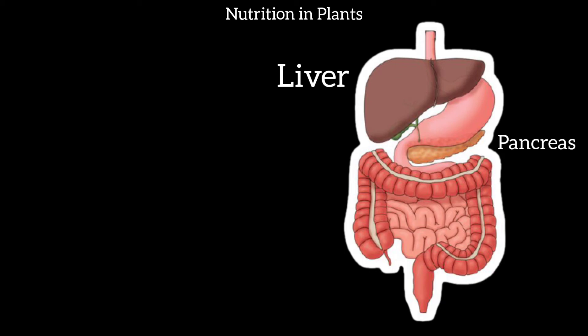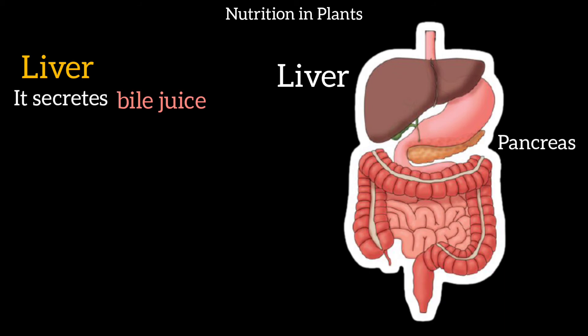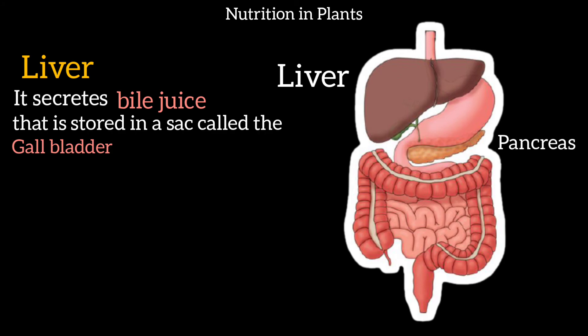In the small intestine, food is further digested. The liver secretes bile juice, which is stored in the gall bladder. Bile juice helps to digest fats. Fats are also a component of our food, and bile juice is responsible for digesting them.